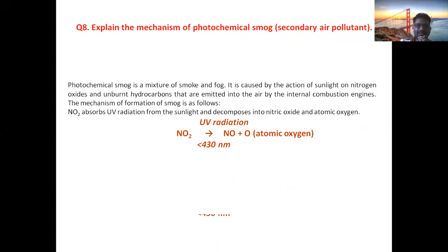Photochemical smog is a mixture of smoke and fog which was first noticed in Los Angeles. Hence it is also known as Los Angeles smog. It is formed by the action of sunlight on nitrogen oxides and unburnt hydrocarbons that are produced into the atmosphere by the internal combustion engines. The mechanism of formation of smog is as follows.